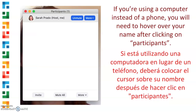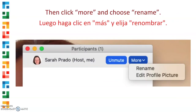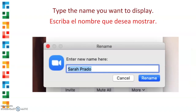If you're using a computer instead of a phone, you will need to hover over your name after clicking on Participants. Then click More and choose Rename, and type the name you want to display.